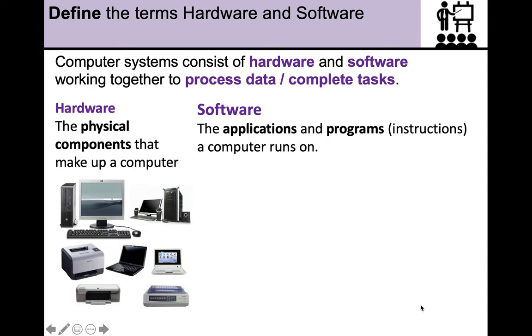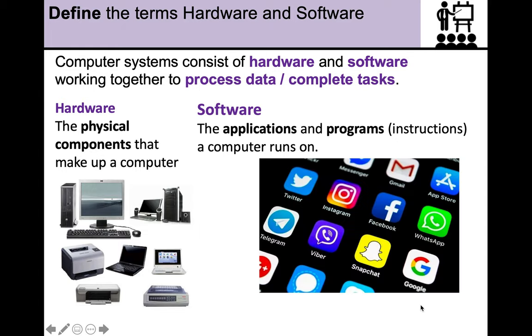And then you have software, the applications and programs or instructions a computer runs on. And yeah, you use the term apps every single day. That's just short for applications. And all of these apps like Snapchat and Google and Viber and Instagram and WhatsApp, these are all software. You can't physically touch them, but they are made of lots of lines of code that compress data and process and enable us to actually use the hardware and do something useful.